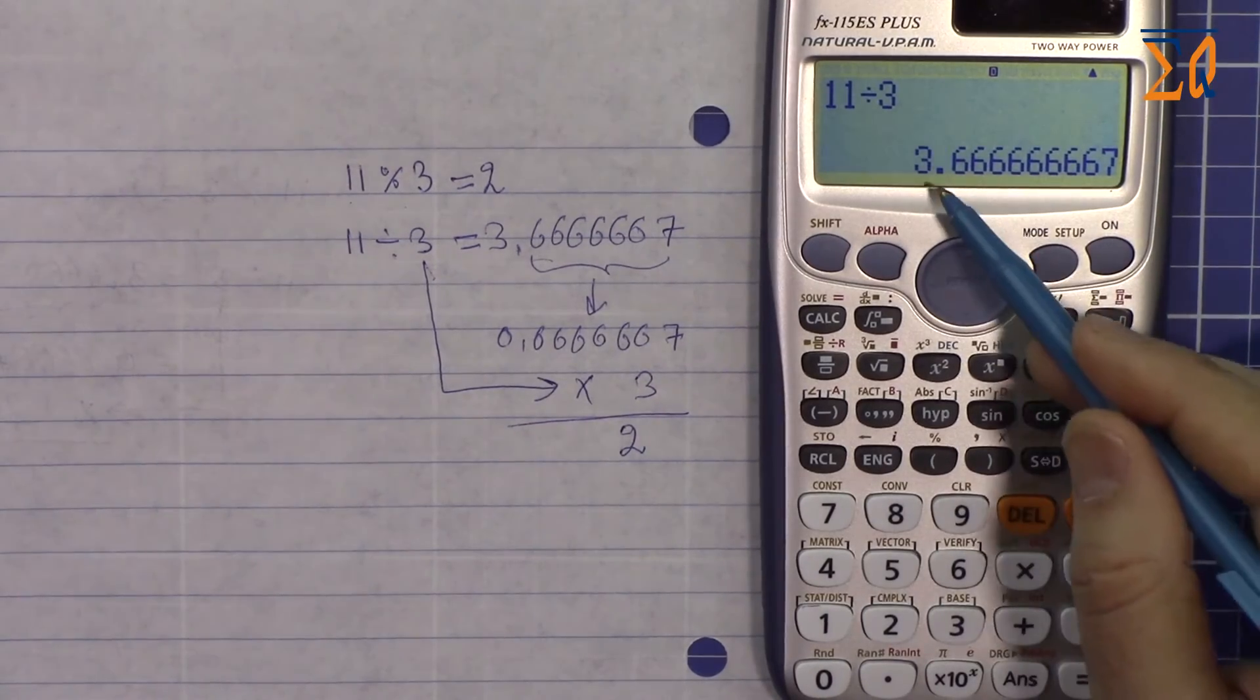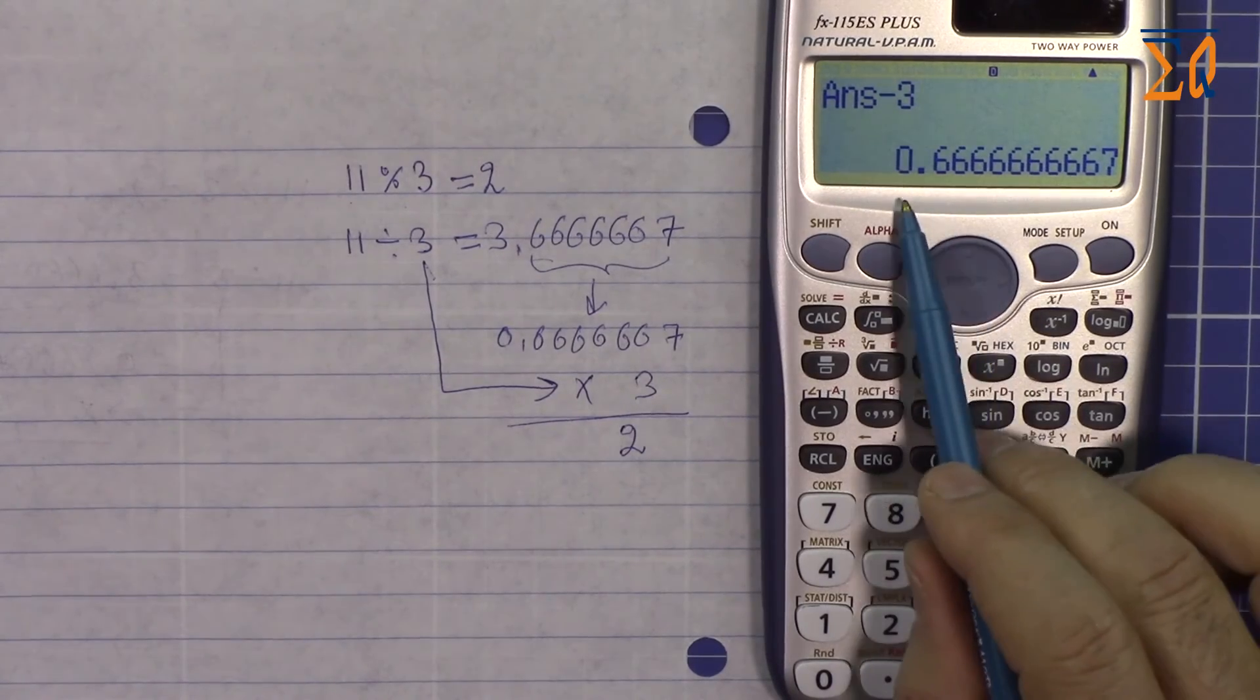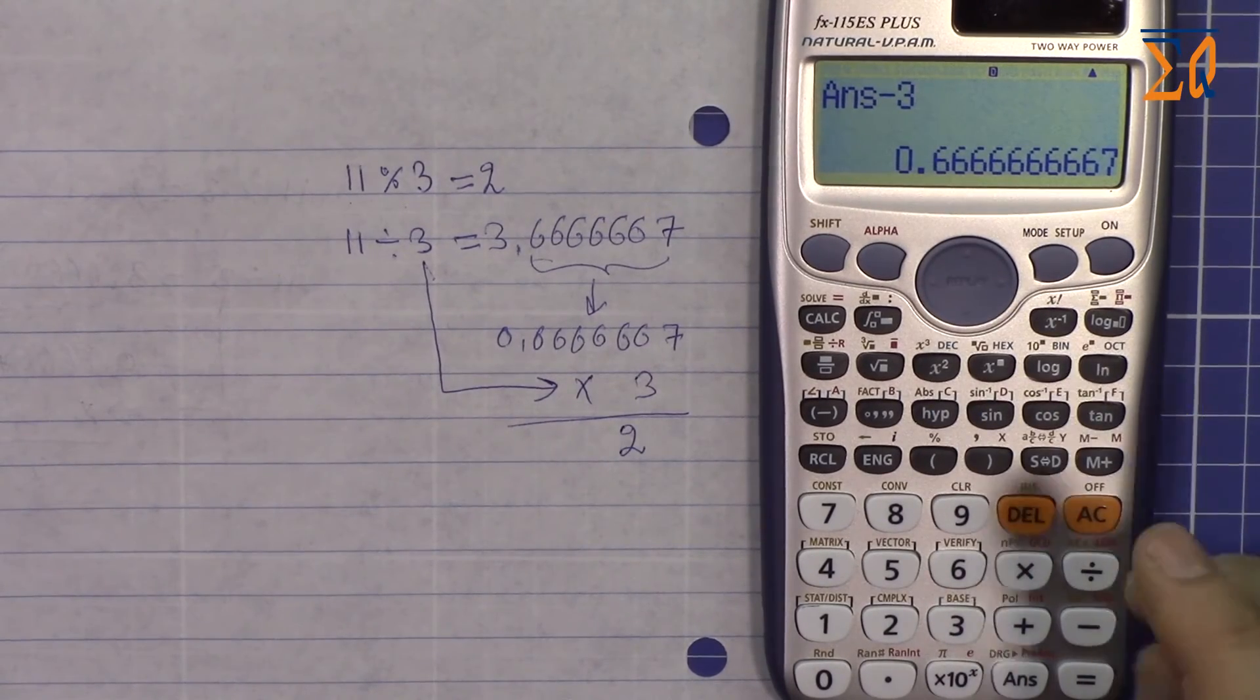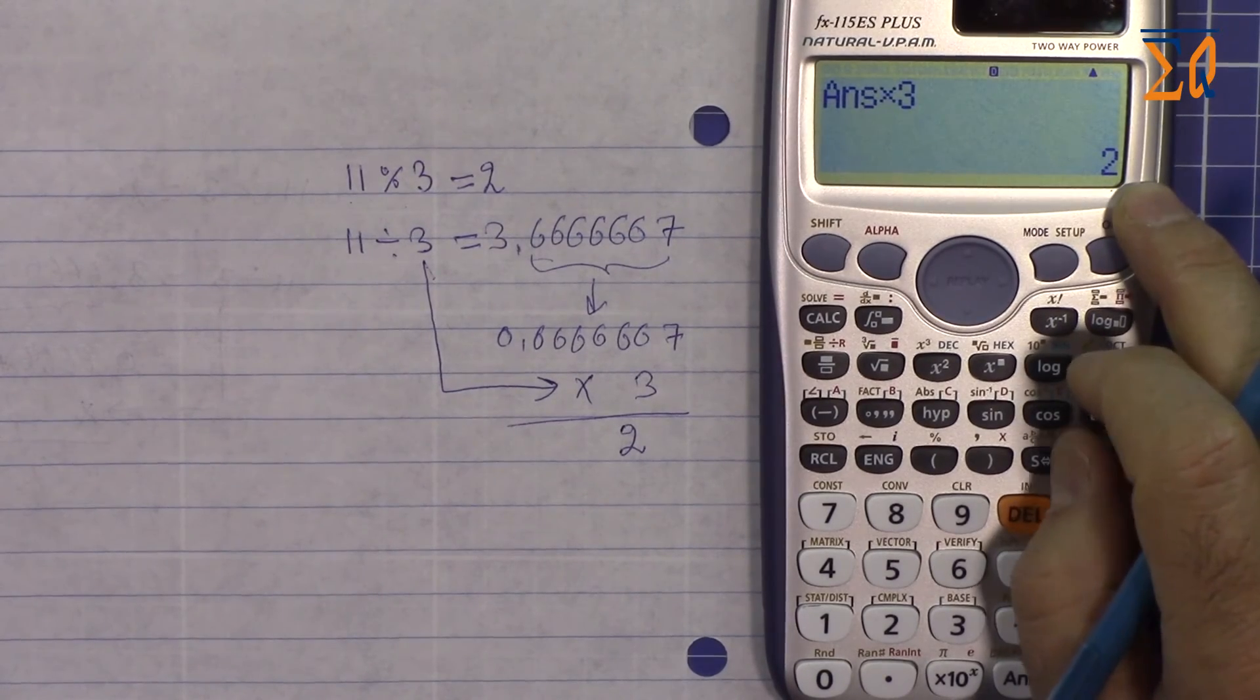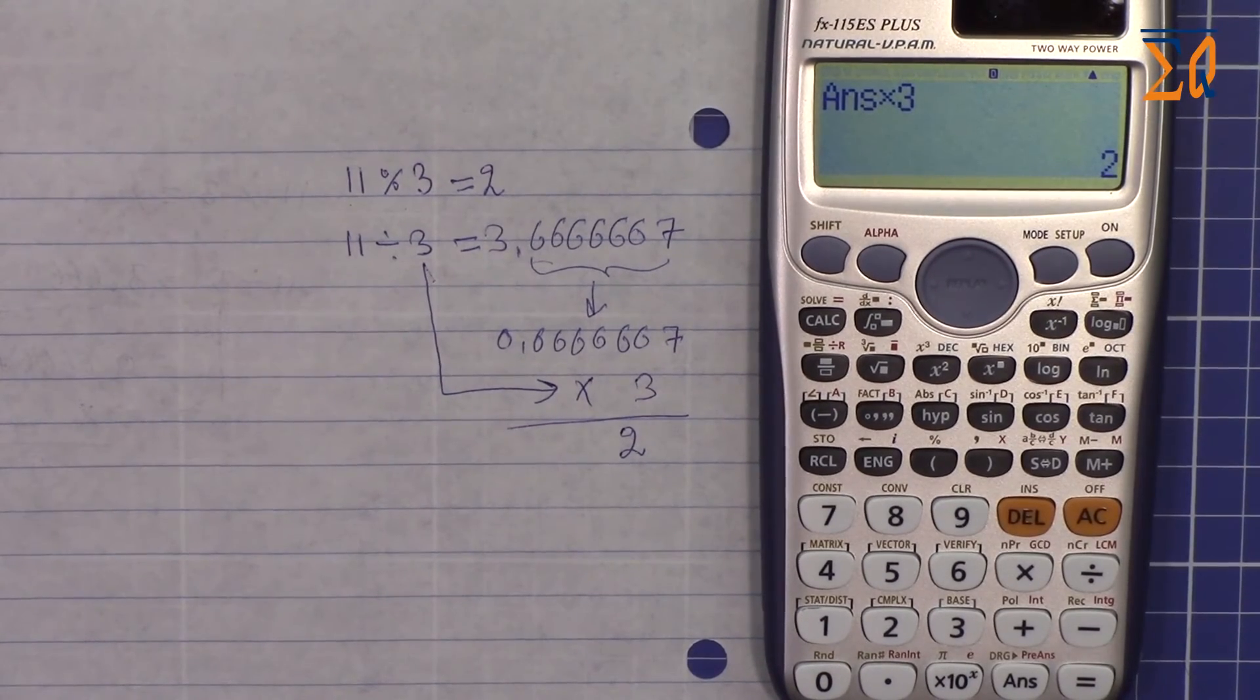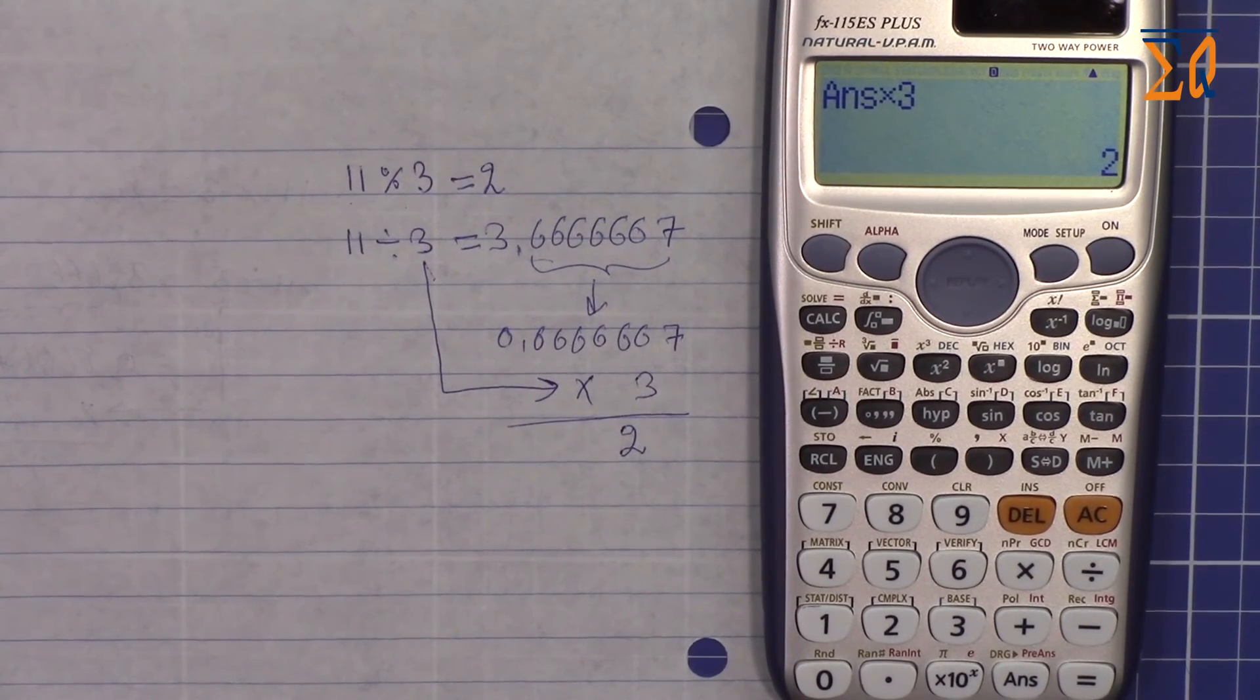Now just subtract 3, so the 3 disappears. Minus 3, so now we have 0.66666, and then multiply by 3, and that's the answer. Thank you very much. I hope you have learned something from this tutorial.